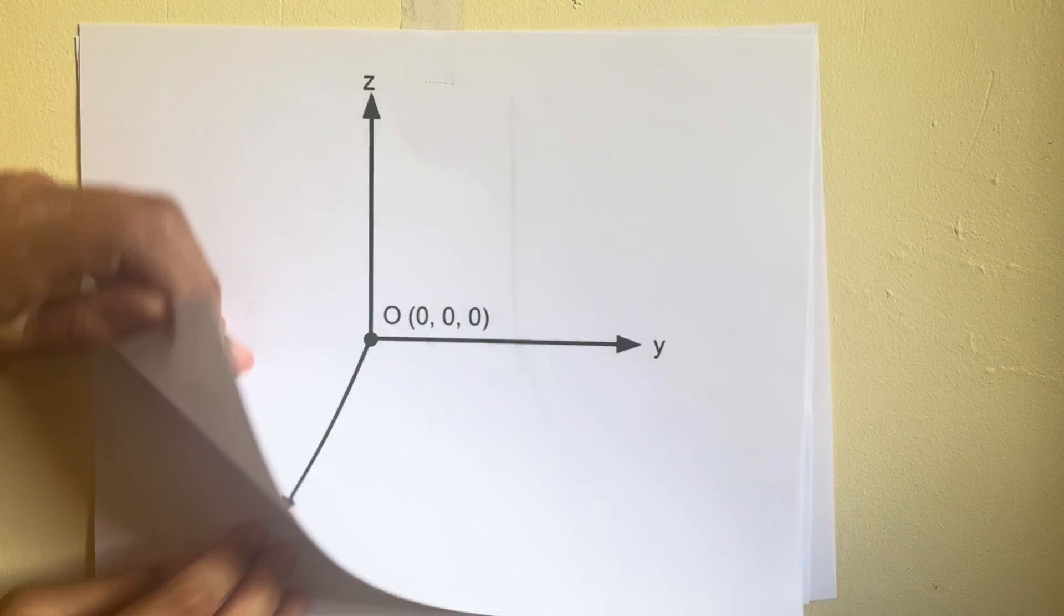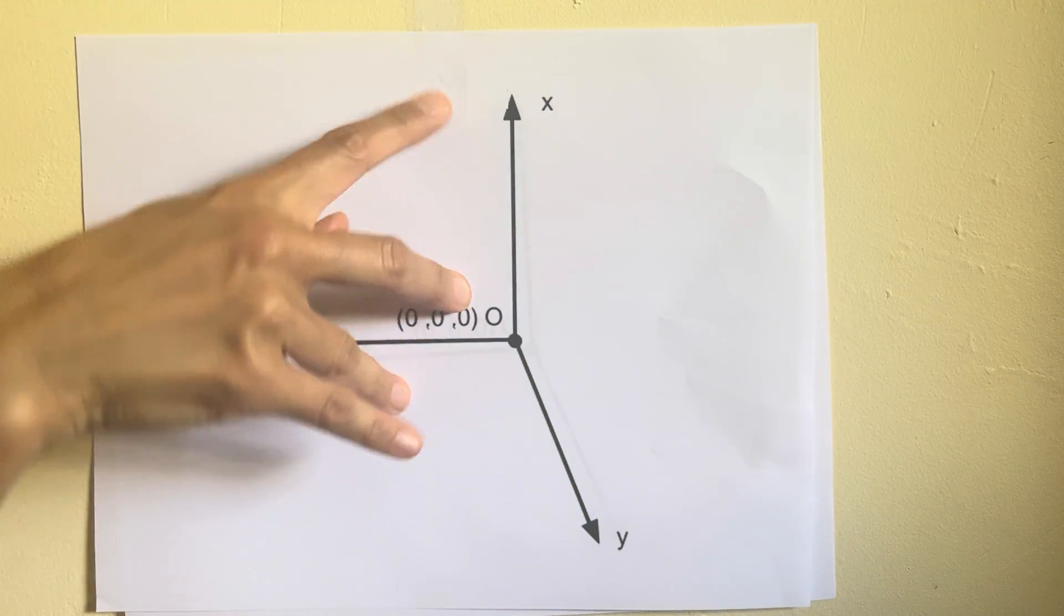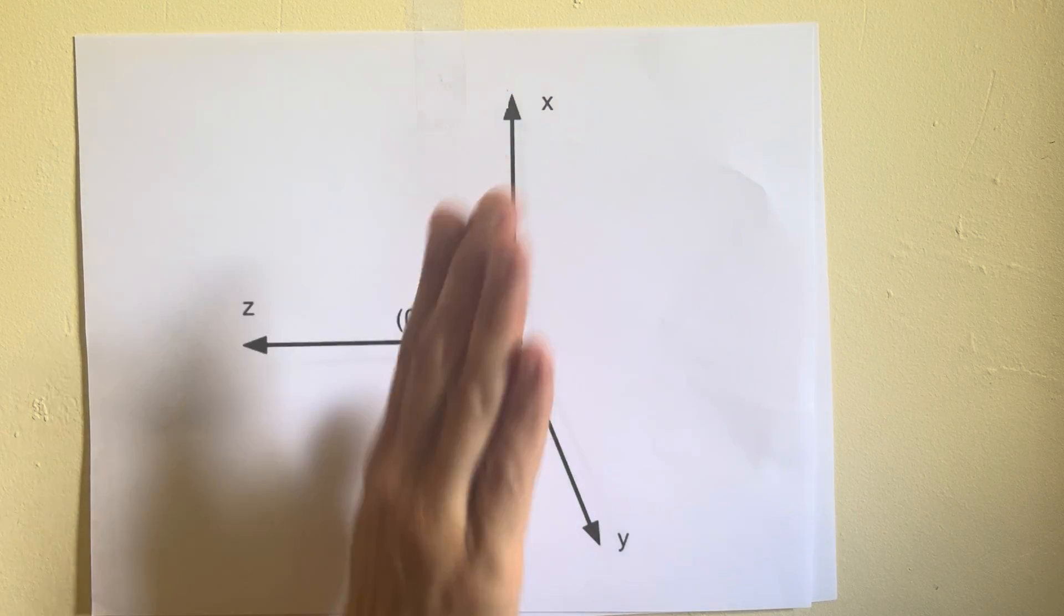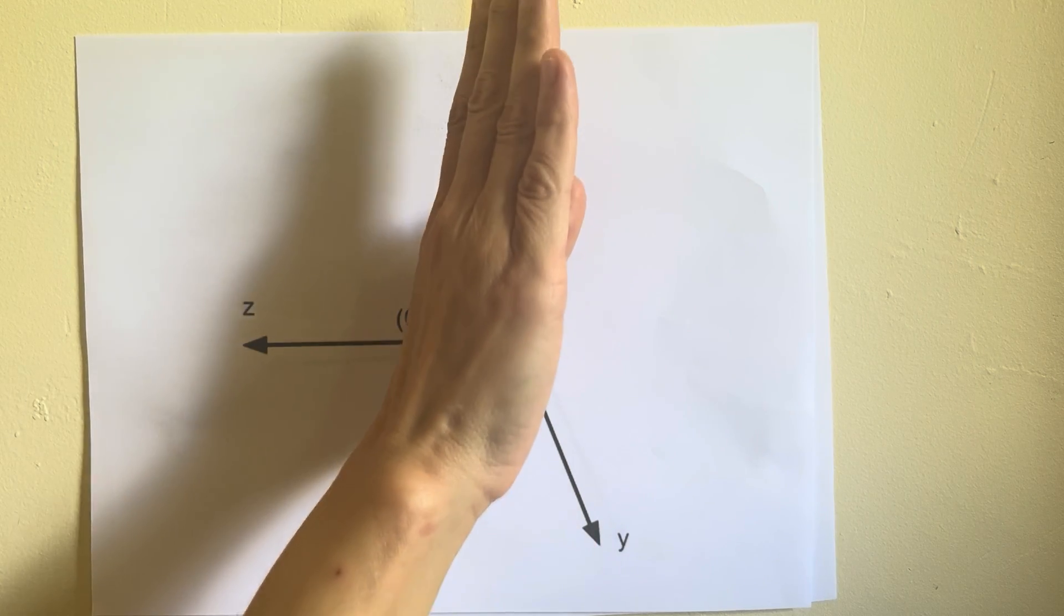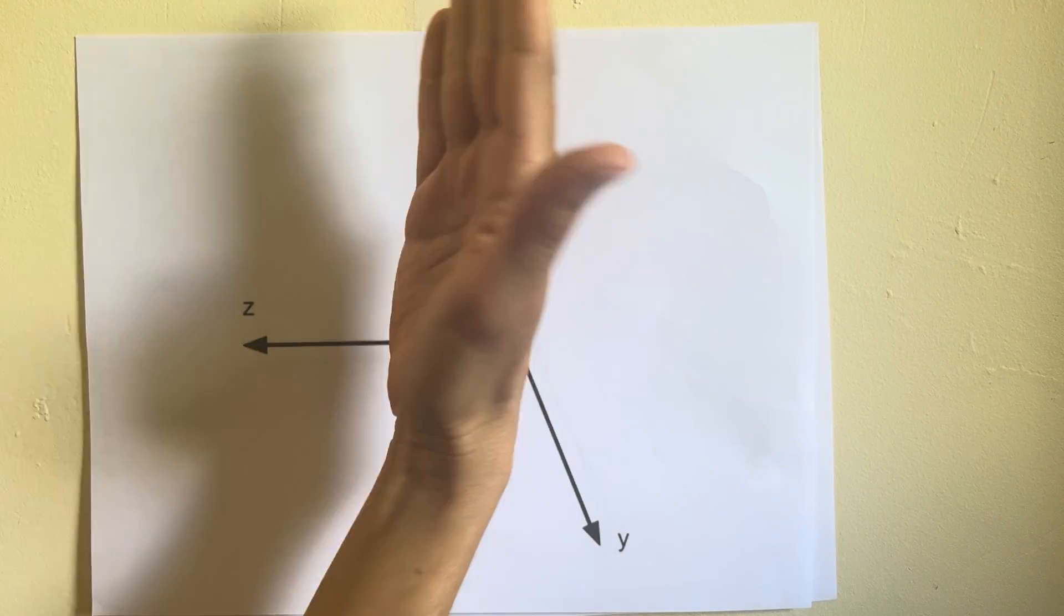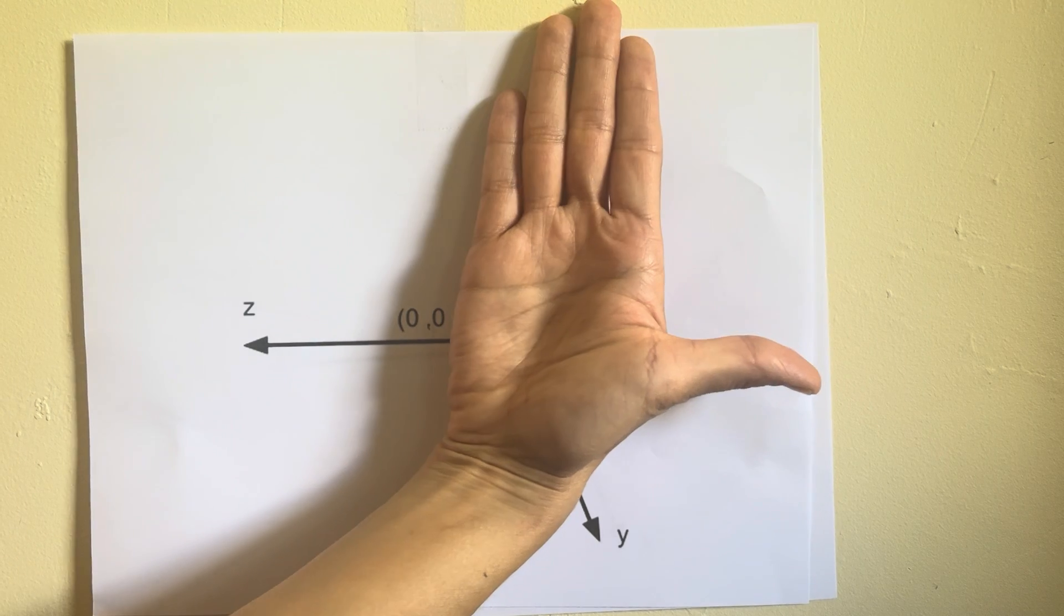But let's look at another example. So now plus x is pointing up toward the top of the page, so I'll put my fingers in the direction of plus x, plus y is pointing out of the page. So I'm going to rotate my hand so the palm points out of the page.